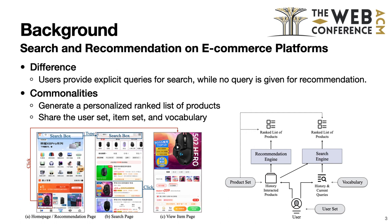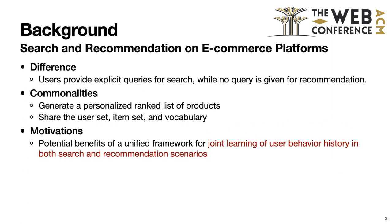However, the key difference between the two scenarios is that users provide explicit queries for search while no query is given for recommendation. In both cases, the underlying objective remains the same: to generate a personalized ranked list of products. As shown in the figure on the right, two engines share the user set, product set, and vocabulary for text processing. Building a unified model for both scenarios has the potential to alleviate data sparsity issues and enhance the overall capability of the model for sequential user behavior modeling, achieving better performance in both scenarios.